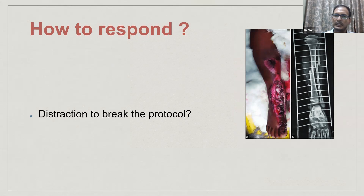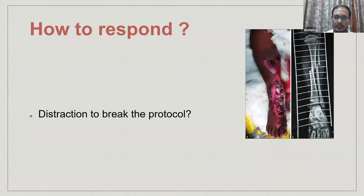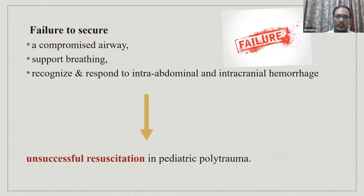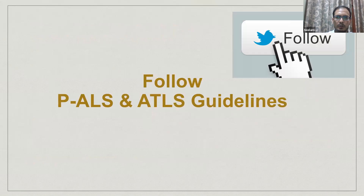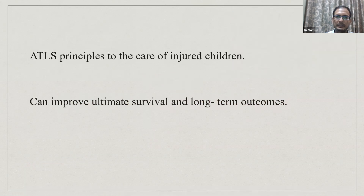If a scenario comes in emergency where the leg is completely wounded, open, and continuously bleeding with the child crying — how do we respond? Do we change our treatment protocol? Does it distract the trauma team? Failure to secure a compromised airway, support breathing and ventilation, and recognize intracranial and intra-abdominal hemorrhage all lead to unsuccessful resuscitation in any pediatric polytrauma case. We should not change our protocol; always follow the pediatric ALS and ATLS guidelines.